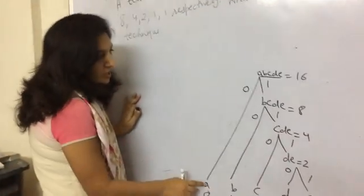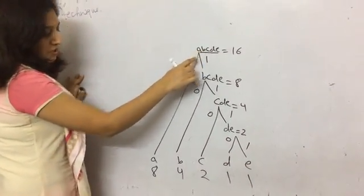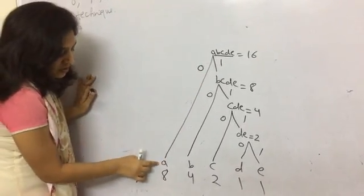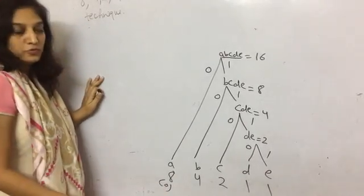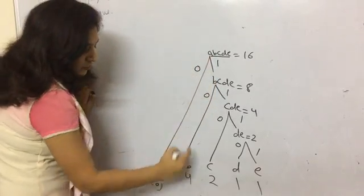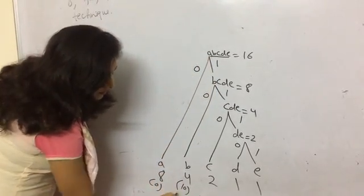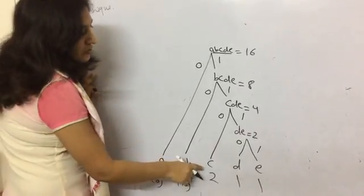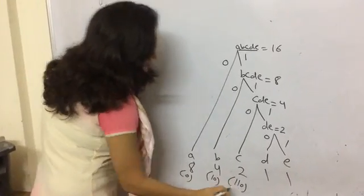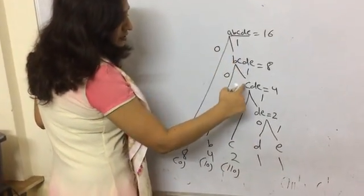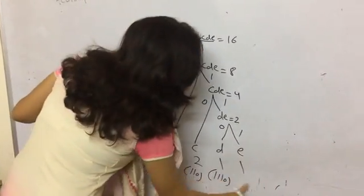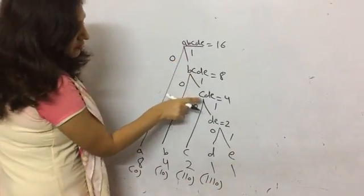Now, to assign the code to A, you will start from the top and see how you are reaching A — only using 0, so you assign code 0 to A. To reach B, you cover the path 1 then 0, so the code is 1,0. For C, you cover the path 1, 1, 0, so the code is 1,1,0. For D, you cover the path 1, 1, 1, 0, so the code is 1,1,1,0. And for E, it would be 1, 1, 1, 1.